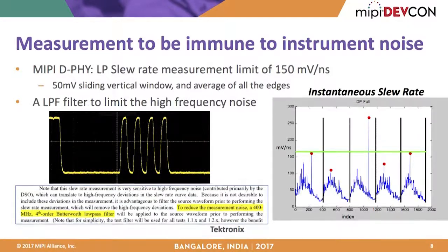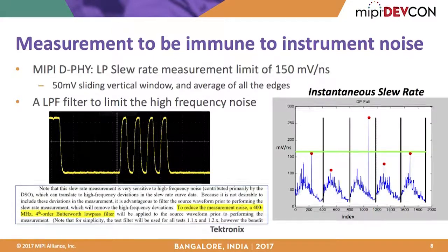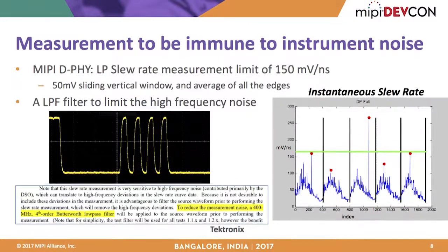The slew rate variation was caused by oversampling and non-monotonic rise/fall transitions with coupled noise. The solution was to apply a band-limit filter — specifically a 400 MHz Bessel-Thompson filter — while performing the slew rate measurement, which makes all transitions monotonic and provides consistent measurement results. This was subsequently added to the compliance specification.